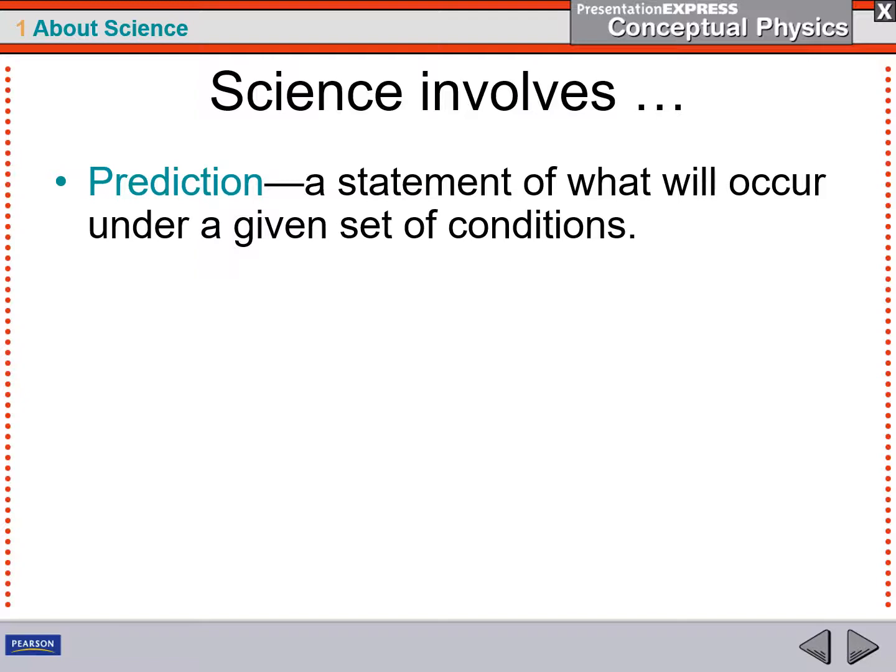Another scientific method that all scientists use is the prediction. A prediction is a statement of what will occur under a given set of conditions.